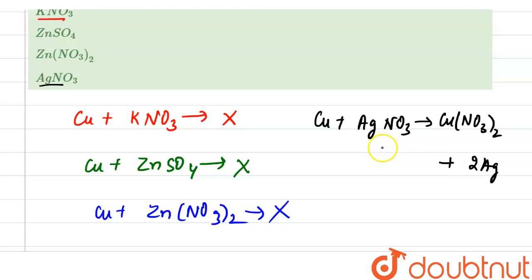When a strip of copper metal is placed in a silver nitrate solution, a grayish white deposit of silver can be seen on the copper strip. This happens because copper is more reactive than silver and displaces silver easily from a solution.